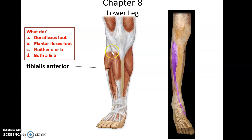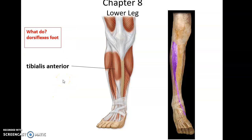Moving down to the lower leg, we have tibialis anterior — tibialis because it's next to the tibia, anterior because it's in the front. What does tibialis anterior do? It dorsiflexes the foot. Following the tendon, it wraps around to underneath the foot; when it contracts, it pulls the foot up, dorsiflexing the foot.